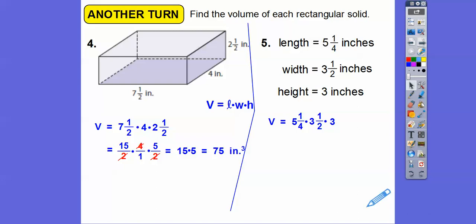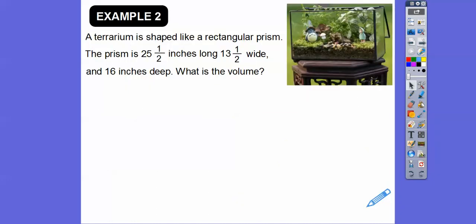This next one. Let's convert those to improper fractions. We get that. Multiply. Nothing cross cancels. 8 goes into 45 times with 4 left over. So we get 5 or 5 again. So we get 55 and 1/8 on that when we do that cubic inches.